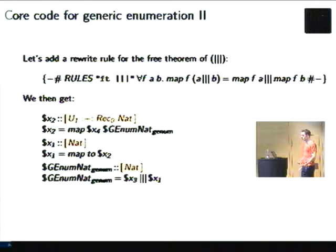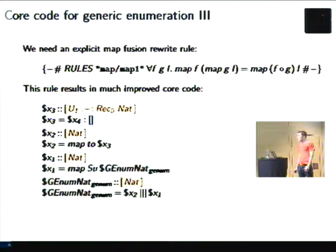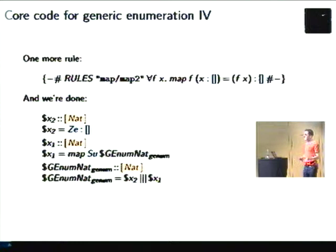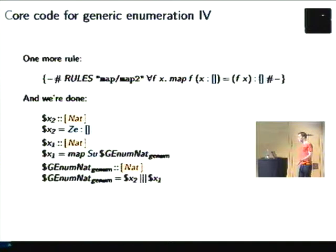Adding that rule gets us something much better, but we still have a map over another map — that's the functor composition law, which we add as another rule. With that, we're in pretty good shape: the successor case is already correct. We still have a map of a function over a single-element list not being optimized away, because map is a recursive function and GHC will not inline it. We add a rule to handle that specialization. With three rewrite rules plus the inline pragmas, GHC generates a perfectly specialized enumeration on naturals — all the generic machinery is gone, exactly as we want.